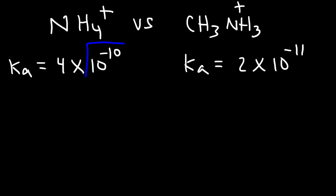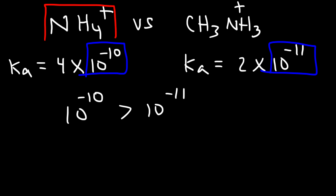10 to the negative 10 is greater than 10 to the minus 11. So therefore, NH4+ has to be the stronger acid, since it has the higher Ka value.